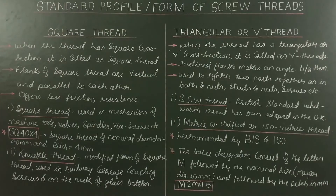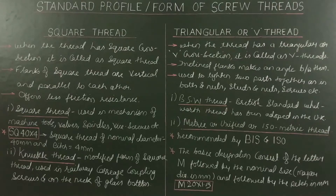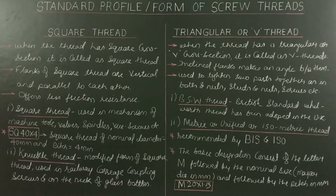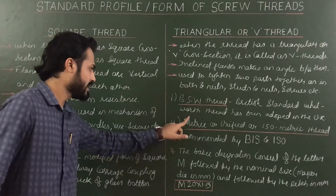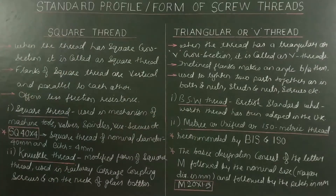BIS stands for Bureau of Indian Standards and ISO stands for International Organization for Standardization. The basic designation consists of the letter M followed by the nominal size (major diameter in mm) and then the pitch in mm. So M20×1.5 means the major diameter is 20mm and the pitch is 1.5mm. In total, we have five types of thread in our syllabus: square thread, knuckle thread, BSW thread, metric external, and metric internal.